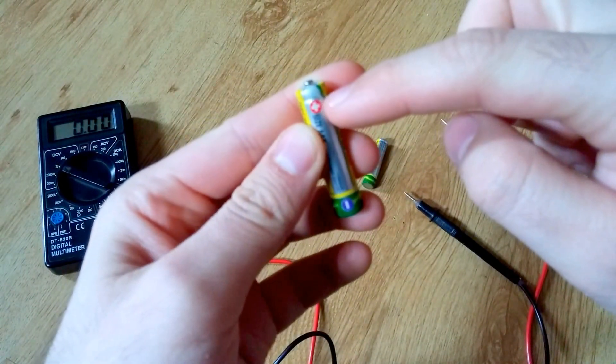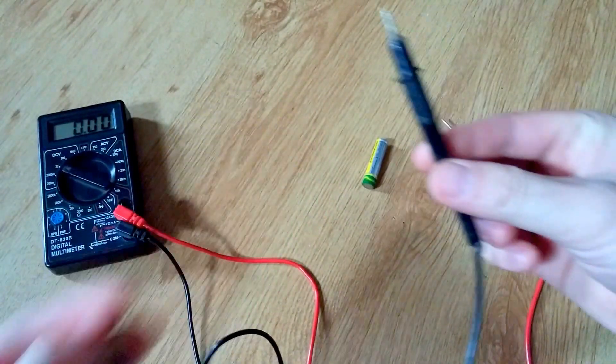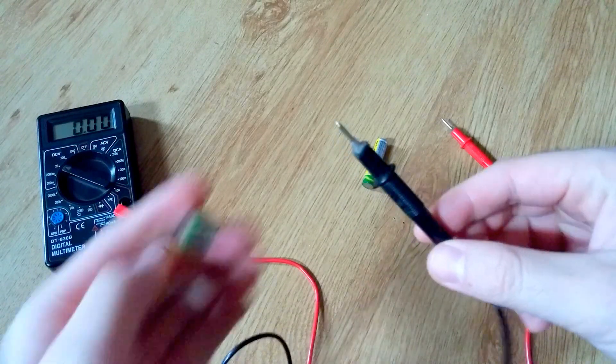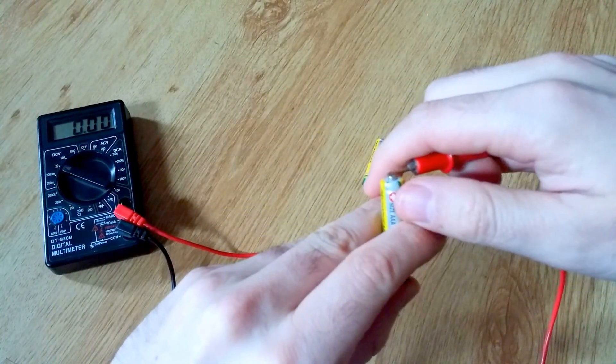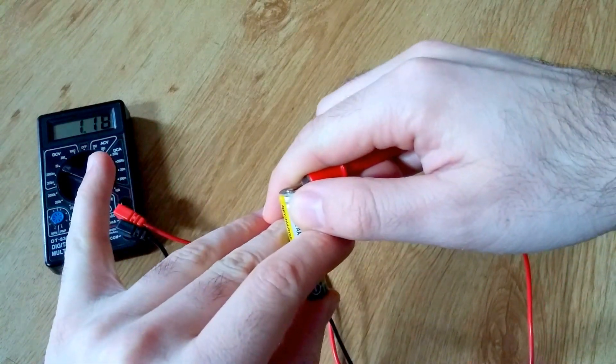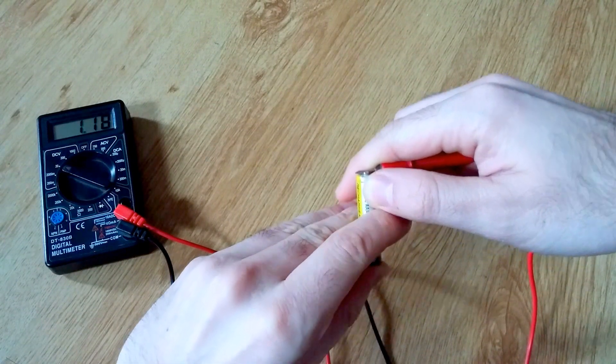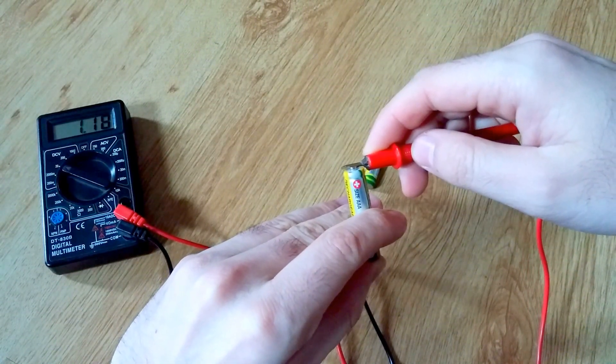That's the positive side and it's even marked plus. That's the negative. The black one is the negative and the red one is the plus. So let's take a measurement. Red goes to plus and we can see here that we have 1.18 volts DC.